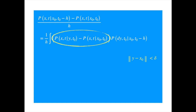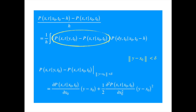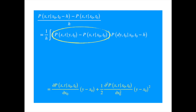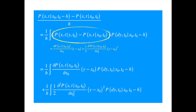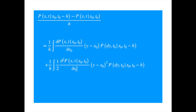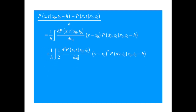Now we can write the difference of the probabilities in terms of the Taylor series, keeping only terms up to second order. This looks slightly complicated, but this is essentially the Taylor series of a function of one variable, because the other variables are the same in both expressions. Substituting the Taylor series expansion and writing the integral of a sum as the sum of integrals, we get a cleaner expression. Since the integrating variable is y, we can take the derivatives out of the integrals because they don't depend on y.